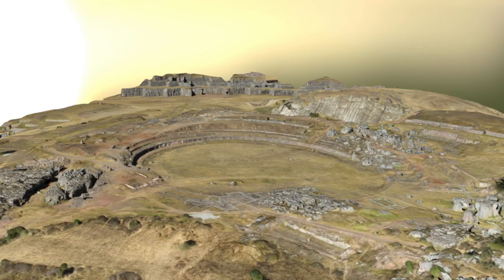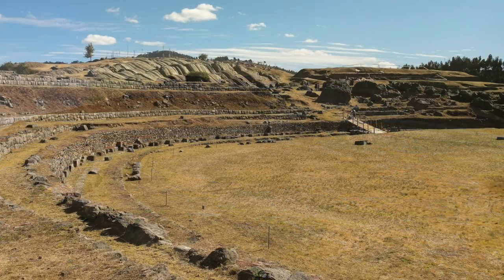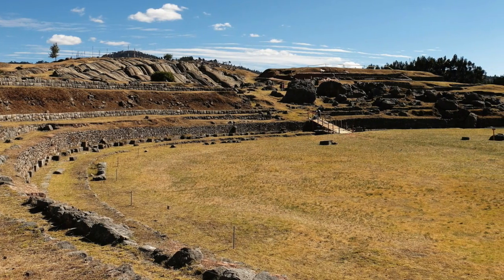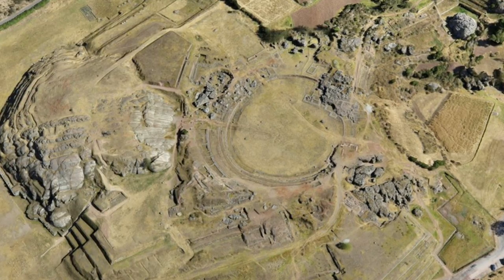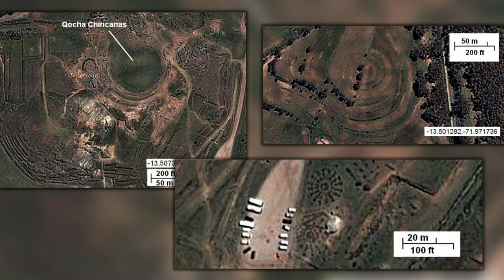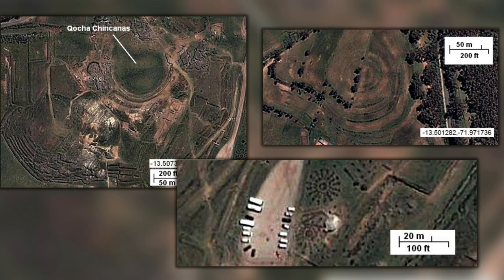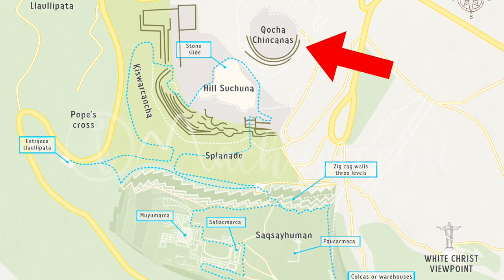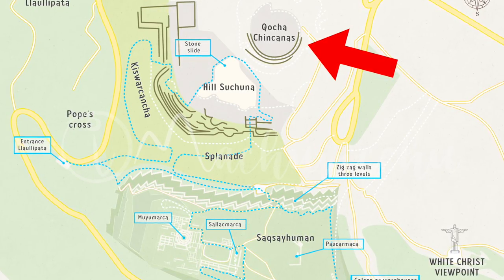In my last video, I focused on this large circular feature next to the ruins of Sacsayhuaman known as Kokachinkarnas, and how this was likely a large man-made reservoir in times gone by. This is because in Quechua, the term coca refers to a lake, pool or pond, either natural or man-made, and also because there are many other very similar coca structures in Peru and Bolivia, all known for being reservoirs. Due to its proximity to Sacsayhuaman and Cusco, this one was probably very important to the Inca Empire.